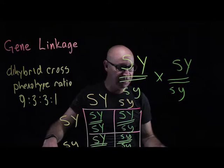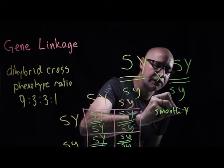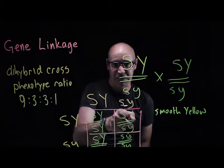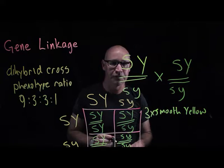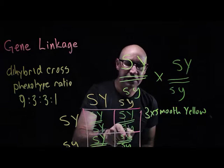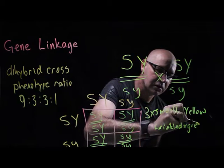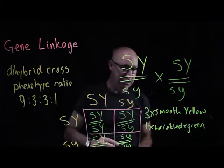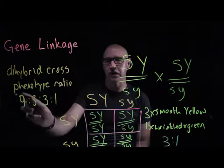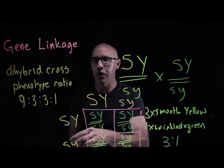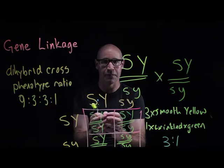Let's look at what these phenotypes are going to be. This one will have the smooth yellow phenotype, and so will these two, because the dominant allele is present — so we're going to have three smooth yellow. We've got one green wrinkled. So we have a di-hybrid cross ratio of 3:1, which is certainly not the 9:3:3:1.